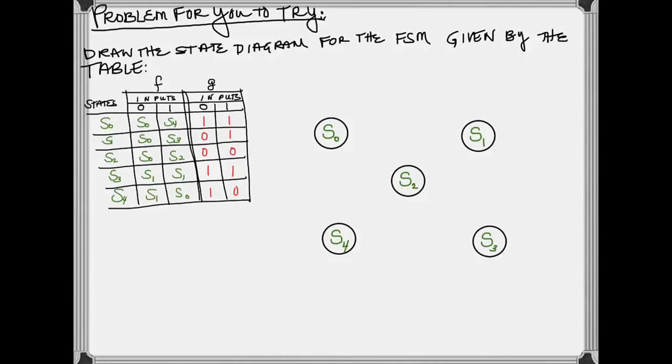And clearly, if you have an input of 0, S0 stays where it is with an output of 1. If you're at S0 and you have an input of 1, you transition to F4 with an output of 1.